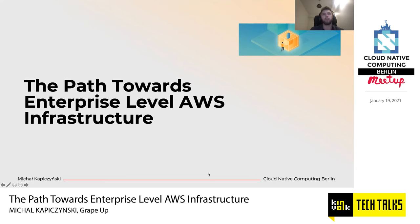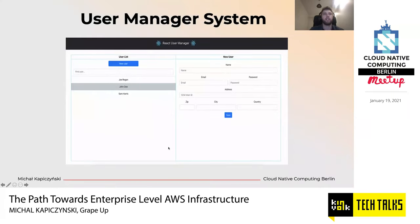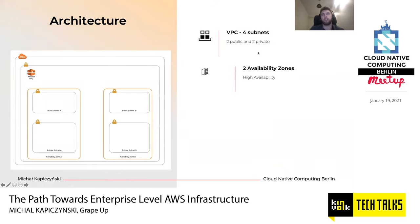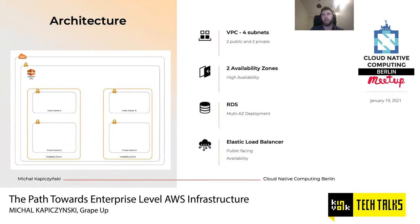The goal of this presentation is to create a real-life AWS architecture which will be able to host a user manager system consisting of a React.js front-end application, a Spring Boot backend server, and a relational database. Our infrastructure will comprise four subnets — two public and two private — distributed into different availability zones for high availability.